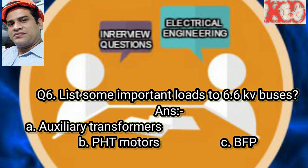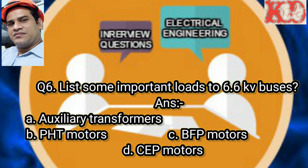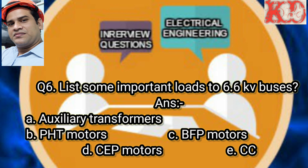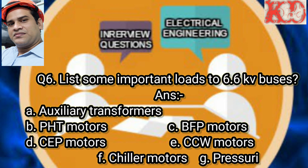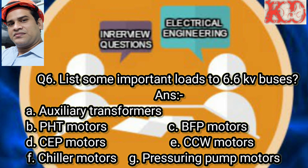Question number 6: List some important loads on 6.6 KV buses. Answer: First, auxiliary transformers; second, PHT motors; third, BFP motors; fourth, CEP motors; fifth, CCW motors; sixth, chiller motors; seventh, pressurizing pump motors.